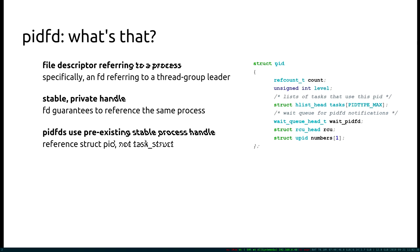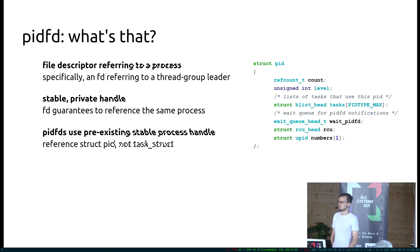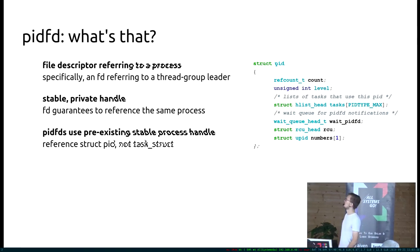So thread group leaders in the kernel are really horrible in general. So it's a stable private handle. The file descriptor — a PIDFD — guarantees that you maintain a reference to the same process as long as you hold that FD open. And it works in a very specific way. PIDFDs use a pre-existing stable process handle that the kernel already knows about, which is struct pid. It's already used in proc to pin a process.